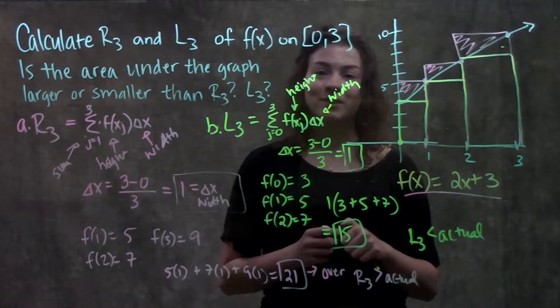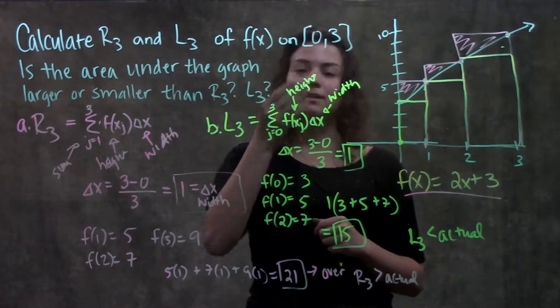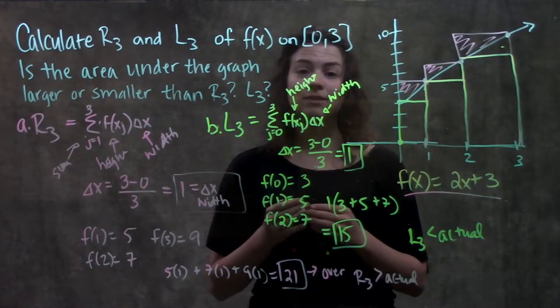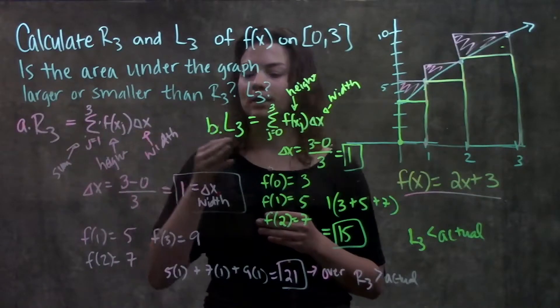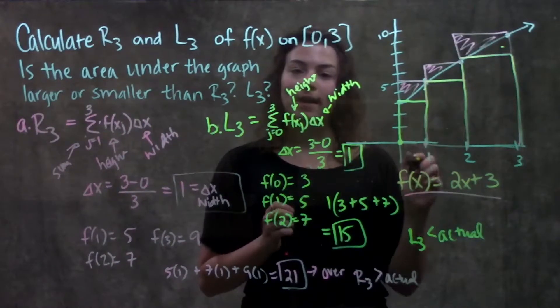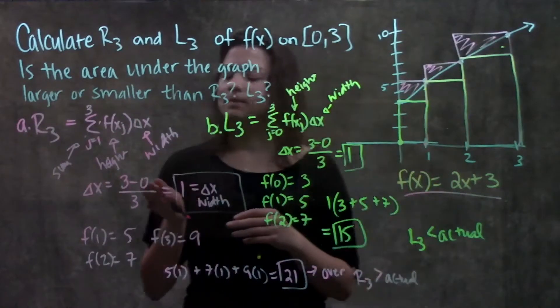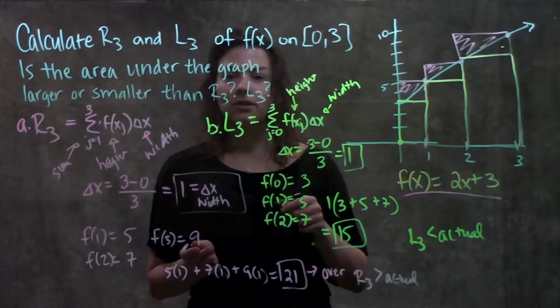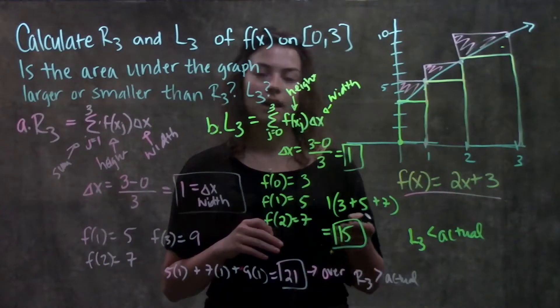And that's it for this problem. First we had to find our delta x by calculating the difference in our interval divided by the number of rectangles that they wanted us to find. And then we found all of our corresponding y values with each of those x values. We multiplied them together to find the area of each rectangle, then added them up and got our approximation.